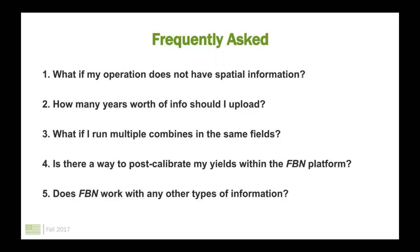What if I run multiple combines in the same fields? FBN has the ability to take information from multiple machines — even different brands — and combine it into one yield map. So if you're running two combines in the same field, as long as we get the information from both combines, we're able to ingest it, process it, and put it together so you have one holistic view of how that field did that year.